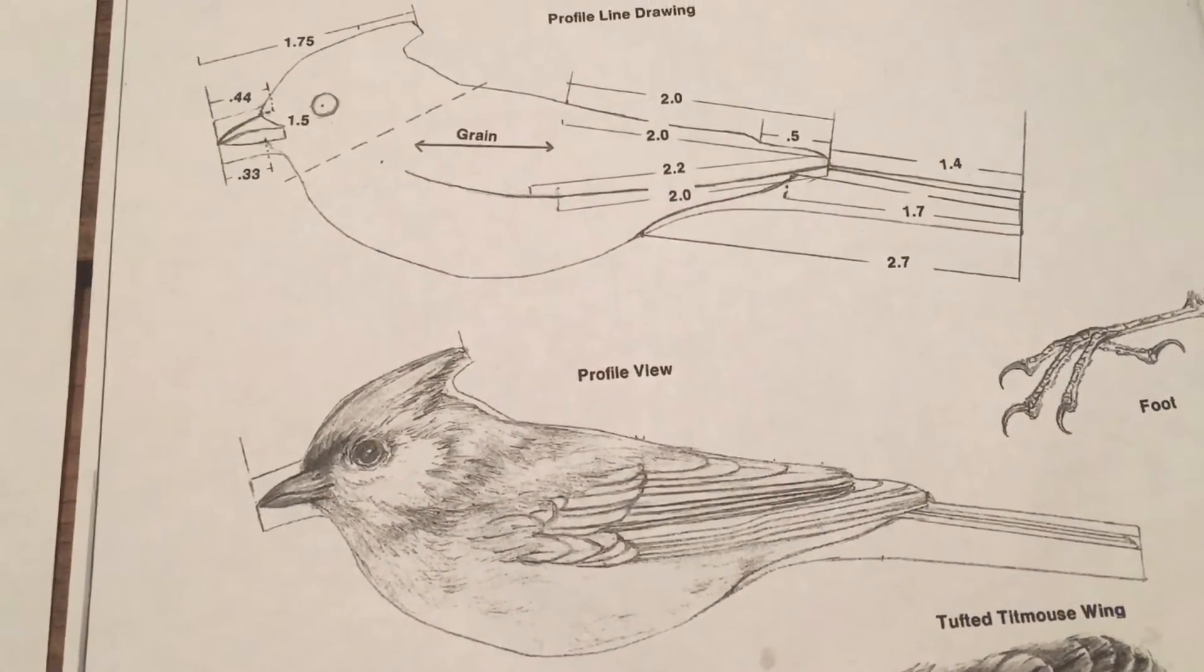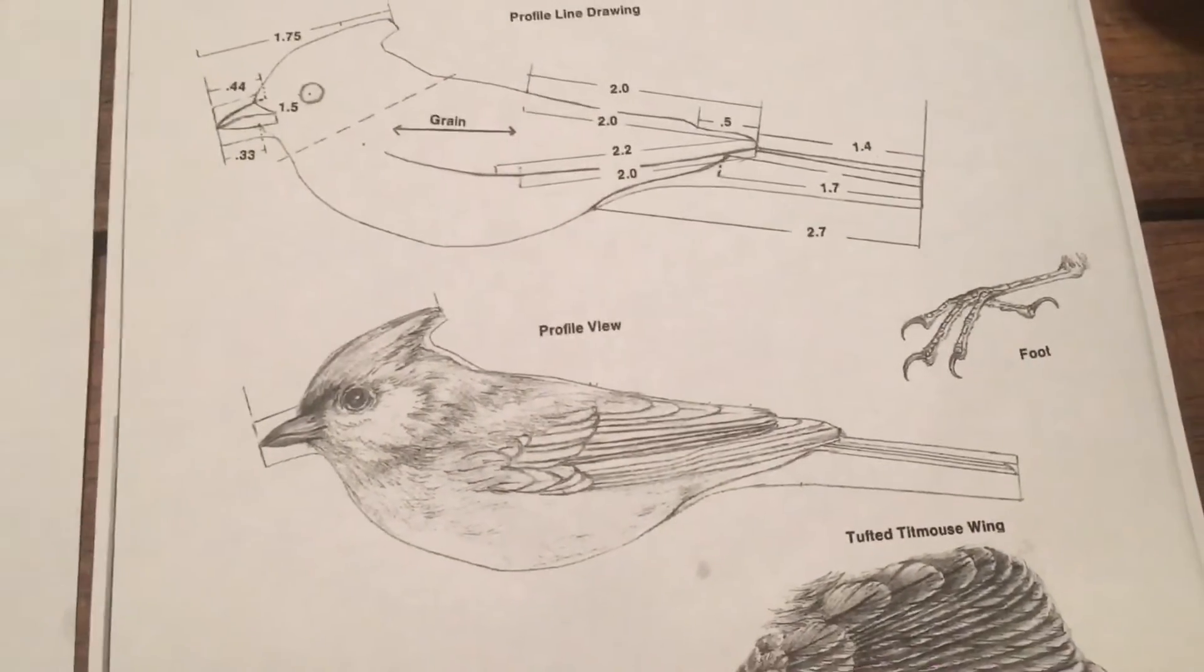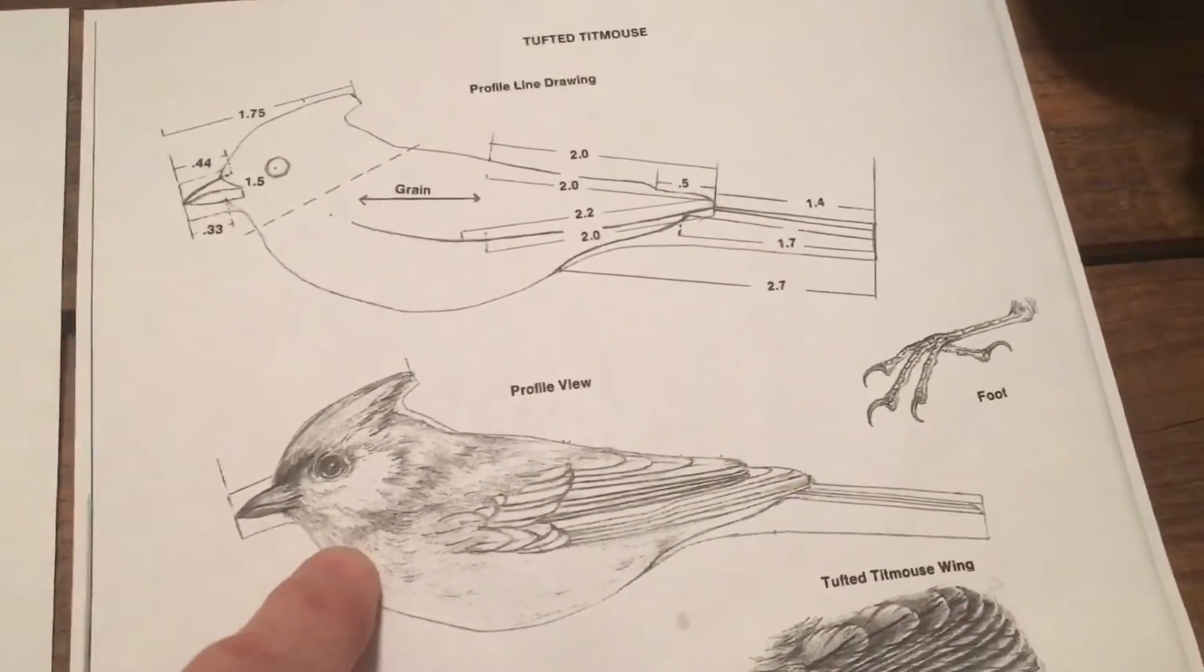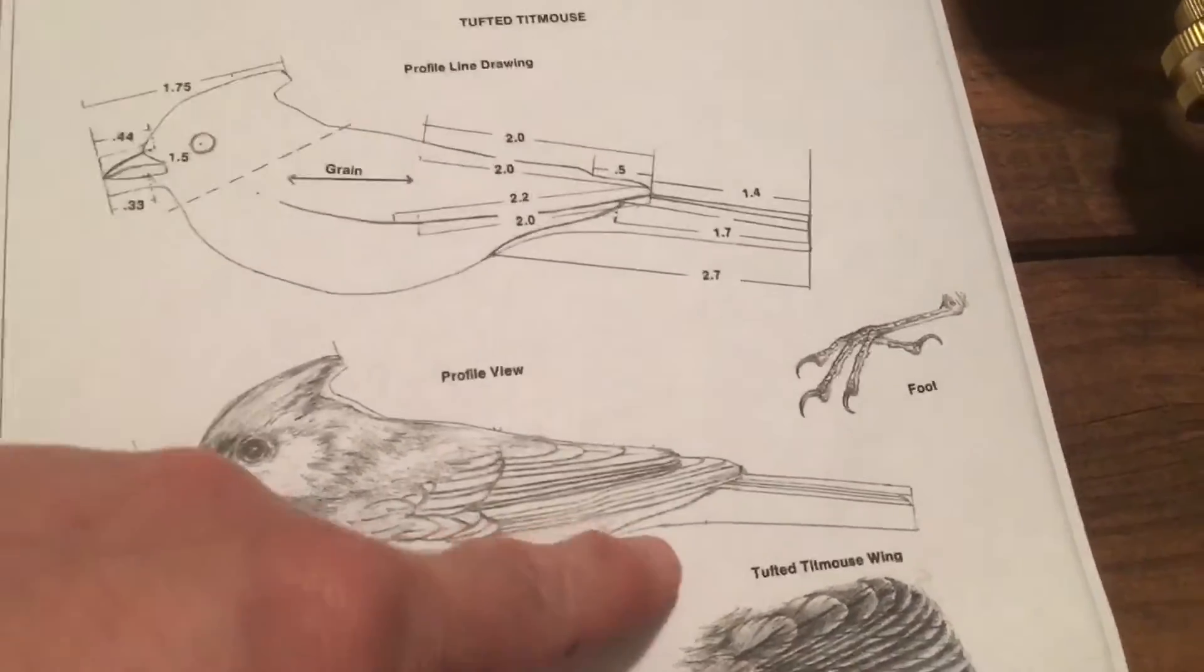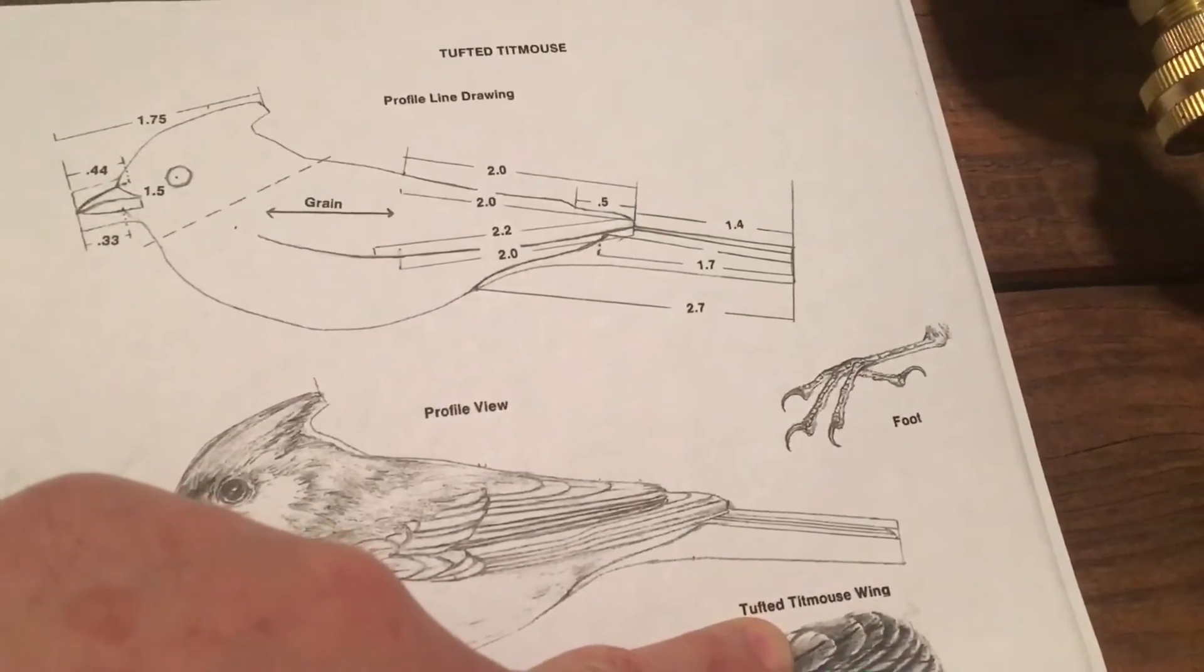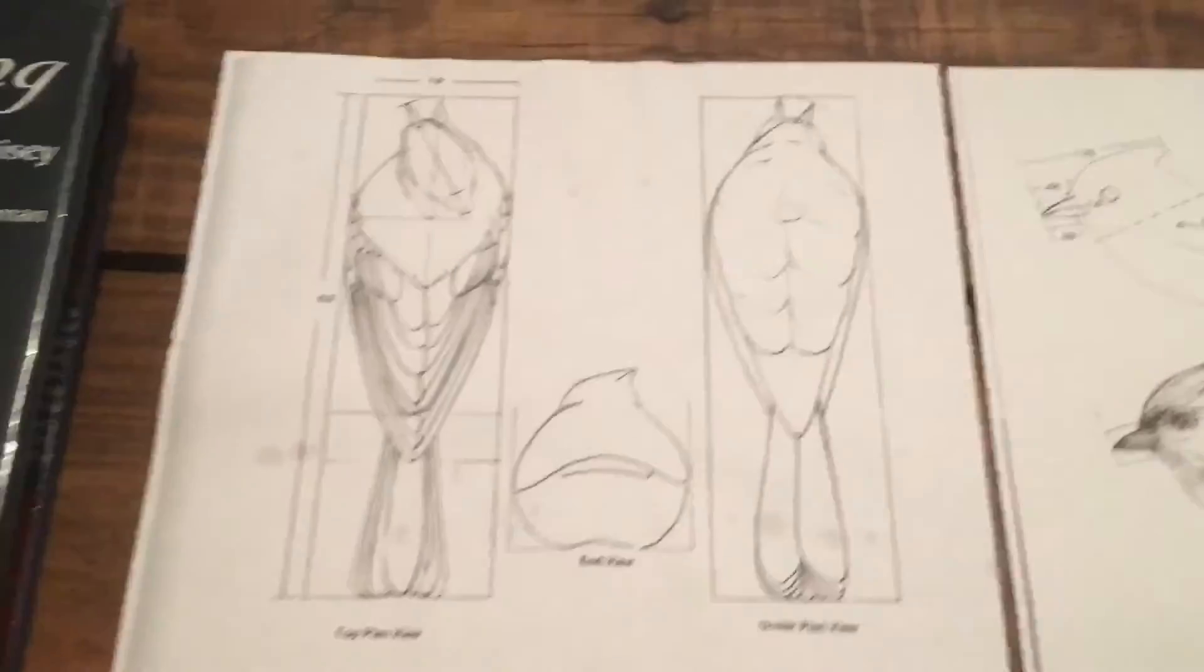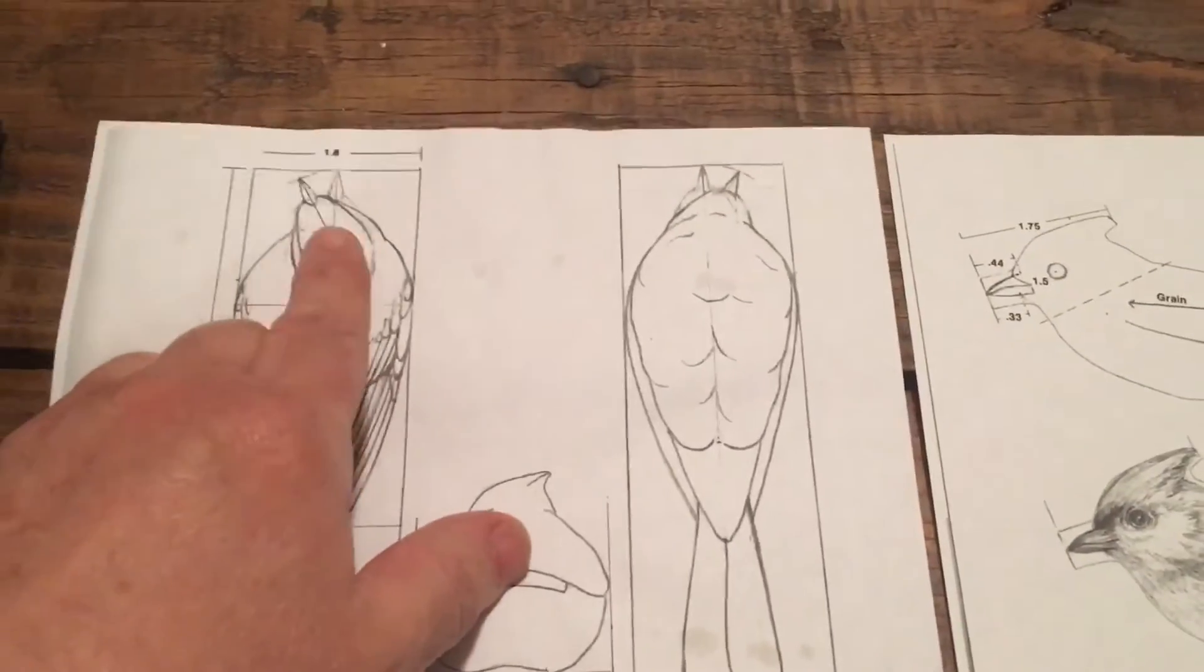Welcome to Mark D. Maker. My name is Mark Taylor. Today we're going to be carving this little bird. It is known as a tufted titmouse, and we're going to be carving it with a turned head.